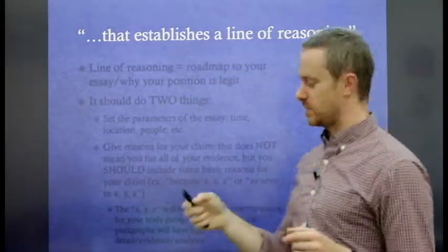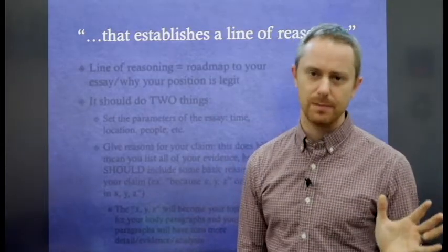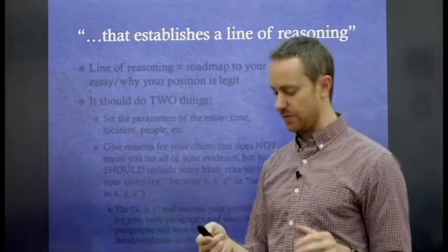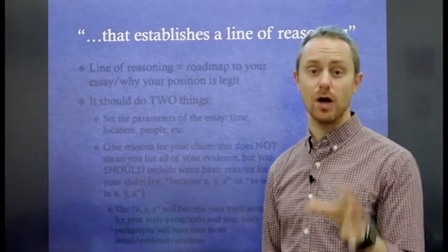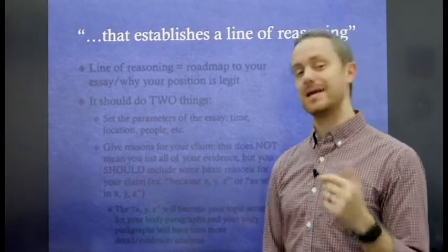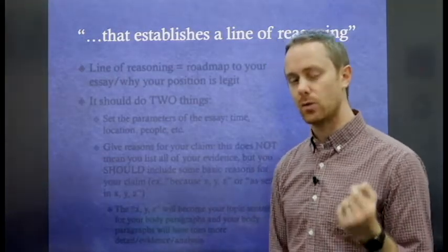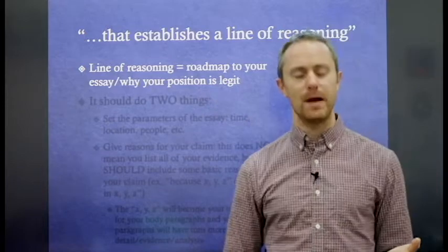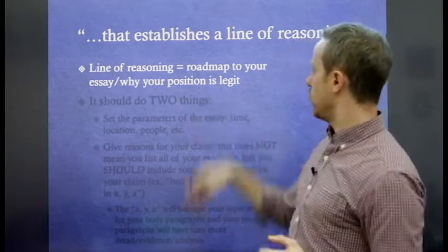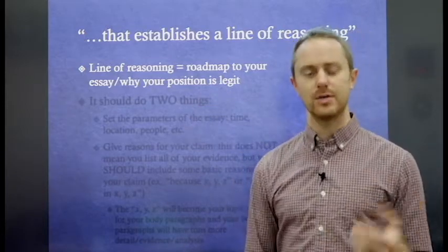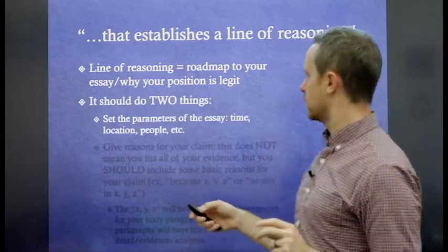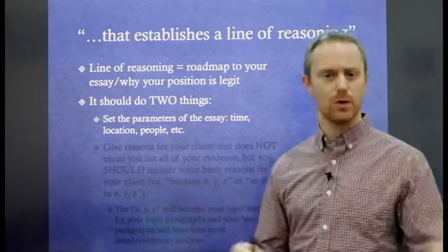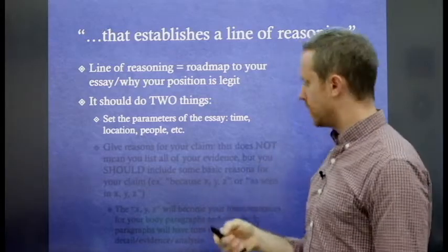Next, establishes a line of reasoning. This is something that many people ignore. This is something a lot of teachers ignore. But let me focus on it for a second because it's in the language of the rubric. This is what the reader wants. Line of reasoning is basically a roadmap to your essay or why you have taken your position, why your position is legit.